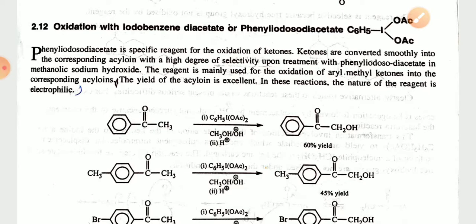Today I am going to teach you the oxidation using phenyl iodosodiacetate, also known as hydrobenzenediacetate. Phenyl iodosodiacetate is a specific agent for the oxidation of ketones. The ketones are converted smoothly into the corresponding acyloin with a high degree of selectivity upon treatment with phenyl iodosodiacetate in a methanolic sodium hydroxide solution. The reagent is mainly used for the oxidation of aryl methyl ketones into the corresponding acyloin. The yield of the acyloin is excellent, and the nature of the reagent is electrophilic.